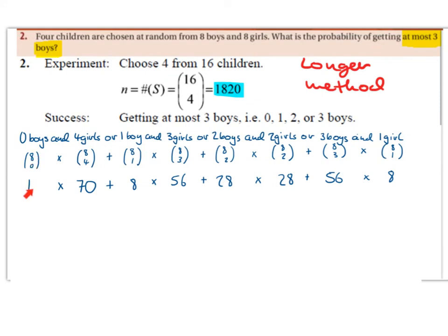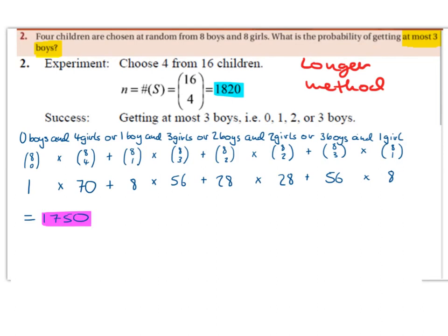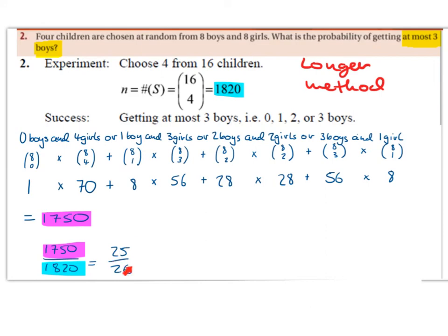8 choose 0 is 1, multiplied by 8 choose 4 is 70, plus 8 choose 1 is 8 multiplied by 8 choose 3 is 56, plus 8 choose 2 is 28 multiplied by 8 choose 2 is 28, plus 8 choose 3 is 56 multiplied by 8 choose 1 is 8. This gives us a total of 1750, so that's 1750 over 1820, which again gives us 25 over 26. We get the same answer, but a much longer method.